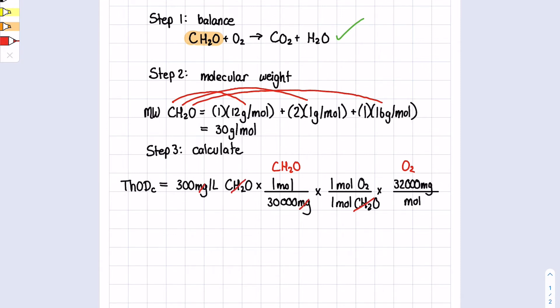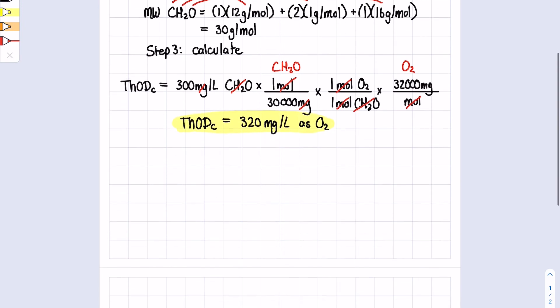The moles cancel, moles cancel, and we end up with a ThODc of 320 milligrams per liter. This is as O2 because that's what we finished with. We'll highlight that very quickly just to make sure we have that.